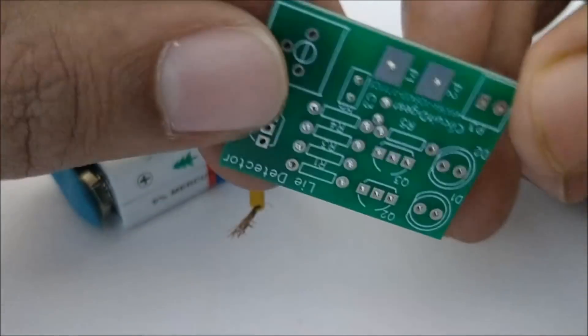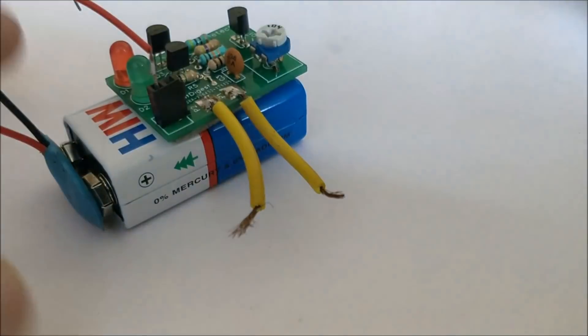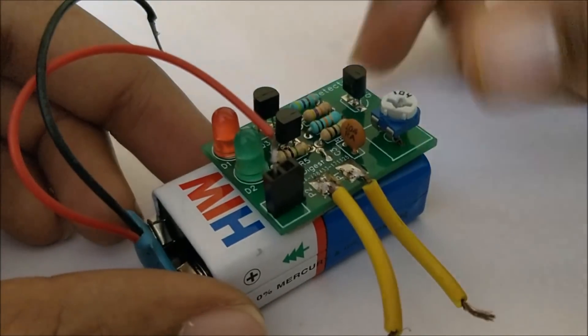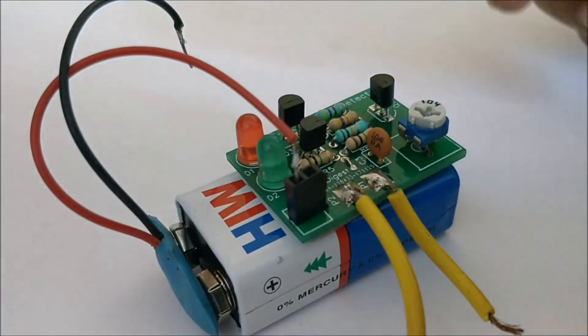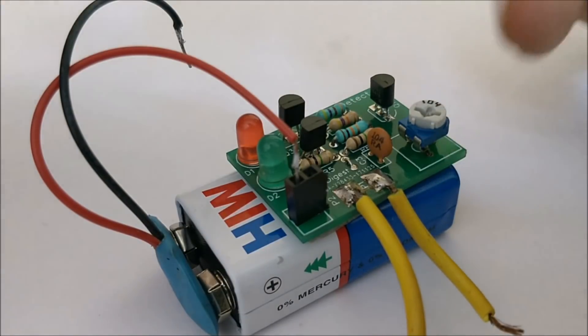Let's check the working of the circuit. How it actually works is that we assume that when a person is trying to speak a lie, he tends to sweat a bit and there is some moisture present on his fingers because his adrenaline kind of pumps up when he speaks the lie.